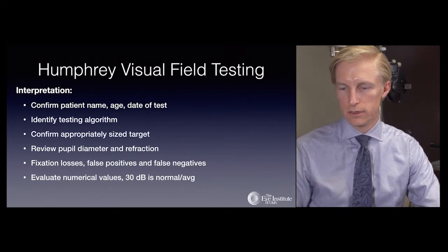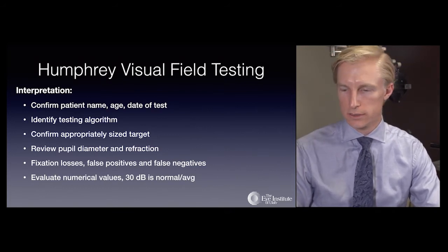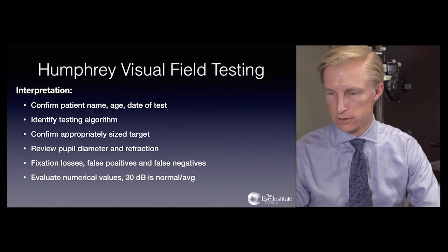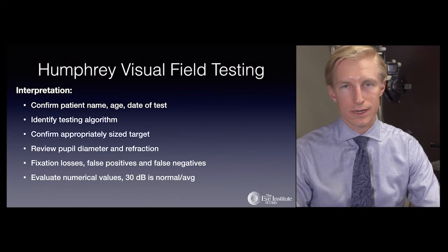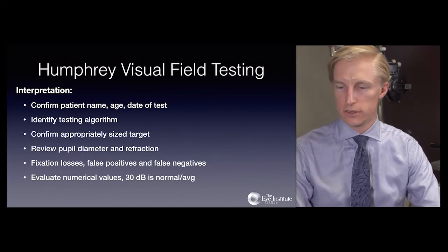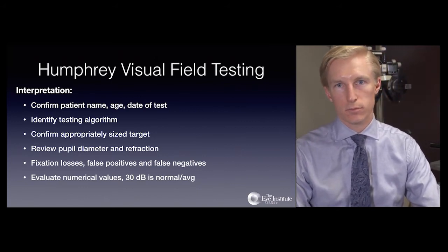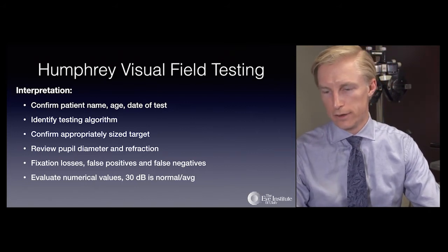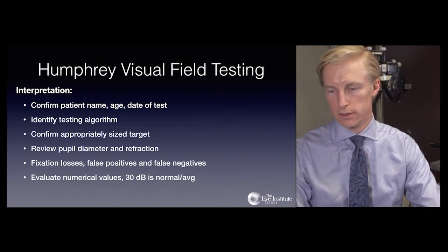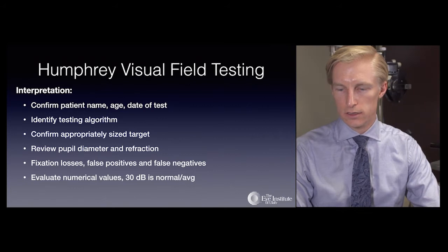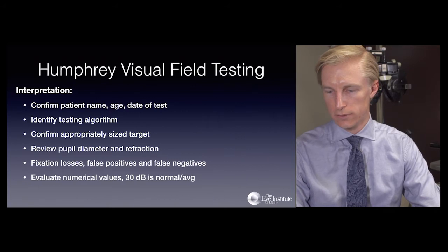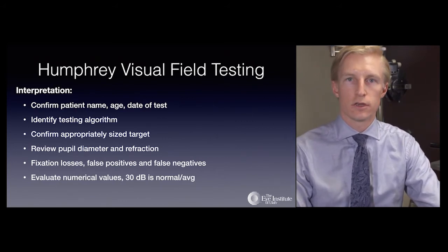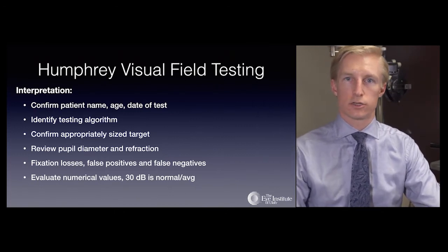Visual field interpretation is important. Confirm the correct patient, appropriate age input, and proper test date. Check the testing algorithm and ensure you're comparing equivalent tests — for example, 24-2 SITA Standard to 24-2 SITA Standard. Confirm an appropriately sized target for the patient's visual acuity, and review pupil diameter and refraction, both of which can affect test quality. Review reliability parameters including fixation losses, false positives, and false negatives, then evaluate the numerical output, looking primarily at the pattern deviation for glaucomatous field loss.